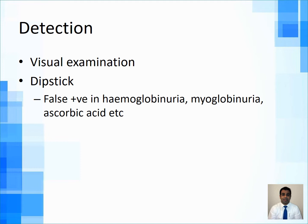You can use dipsticks, but remember dipsticks will also show positivity for hematuria when there is hemoglobinuria, when there is myoglobinuria, or when there are significant amounts of ascorbic acid in the urine. So there can be false positive results with dipstick for hematuria with these entities.